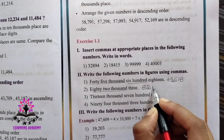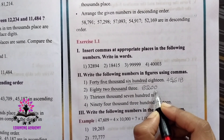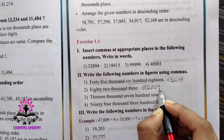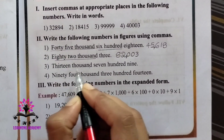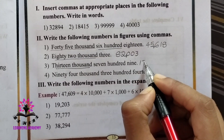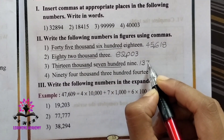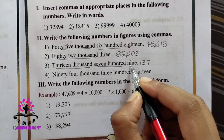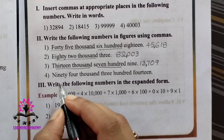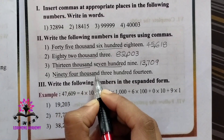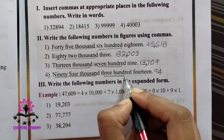Eighty-two thousand three: the 3 is in the unit place, so we put zero in the hundreds place and zero in the tens place — 82,003. Next: thirteen thousand seven hundred and nine — 13,709. Then ninety-four thousand three hundred — 94,300. The comma comes after the hundreds place in each case.